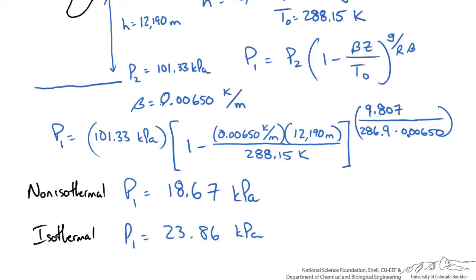So now you can compare our two cases, the non-isothermal and isothermal case, and see there is a pretty significant difference, almost 20% difference between the two. So which one is more accurate in this case?